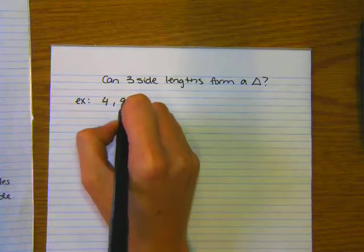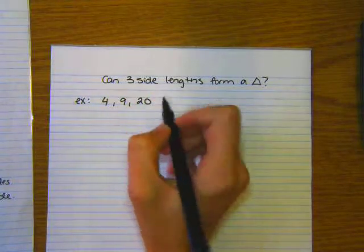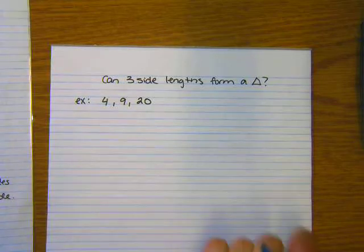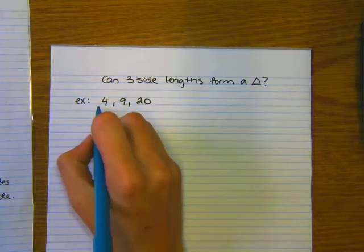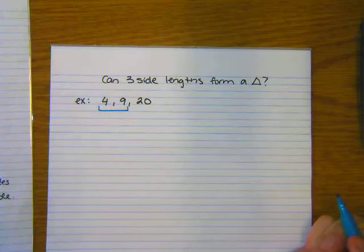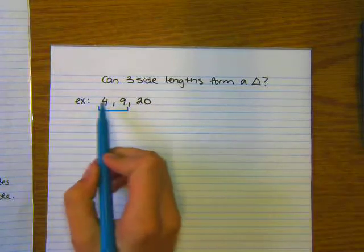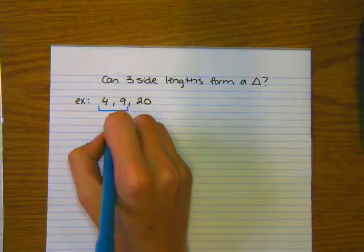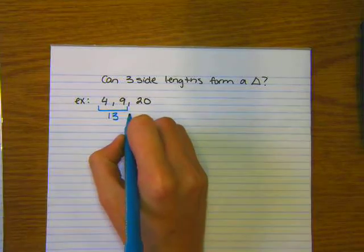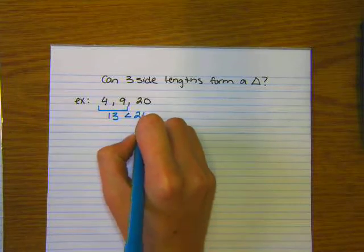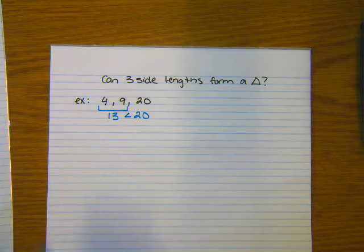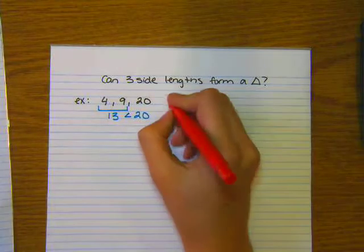So for example, if we have 4, 9, and 20 as our side lengths, we want to know if the two smaller sides add up to be larger than the third. So first we want to identify our two smaller sides. 4 and 9, those are our two smaller sides. So these have to add up and be larger than the third, which is 20. 4 plus 9 is 13. 13 is less than 20, we want it to be greater than. If it's not greater than, it does not form a triangle. So I would say, nope, this one does not form a triangle.